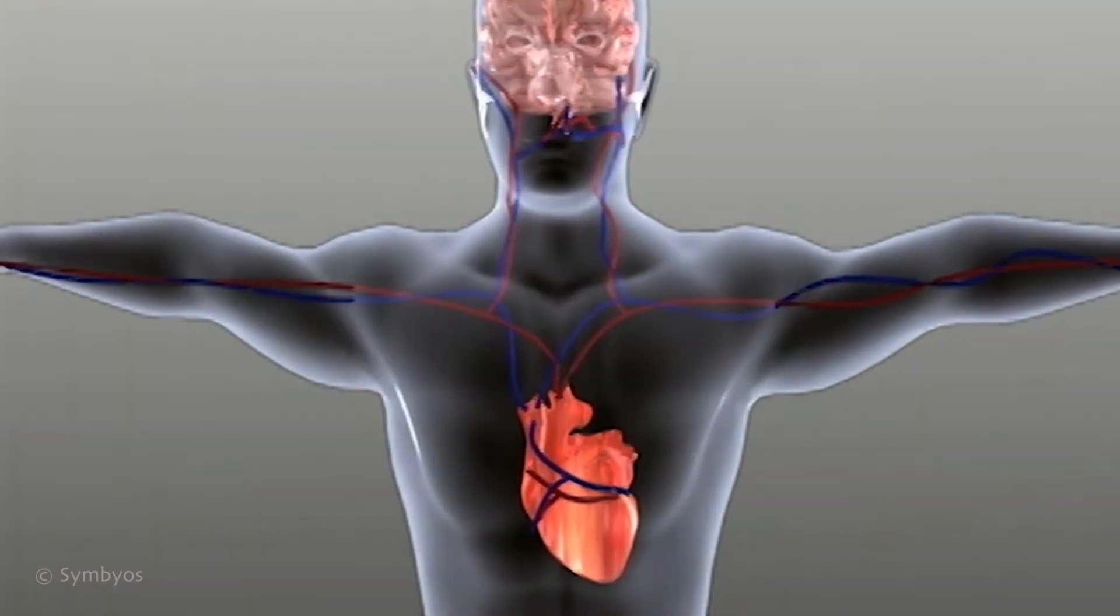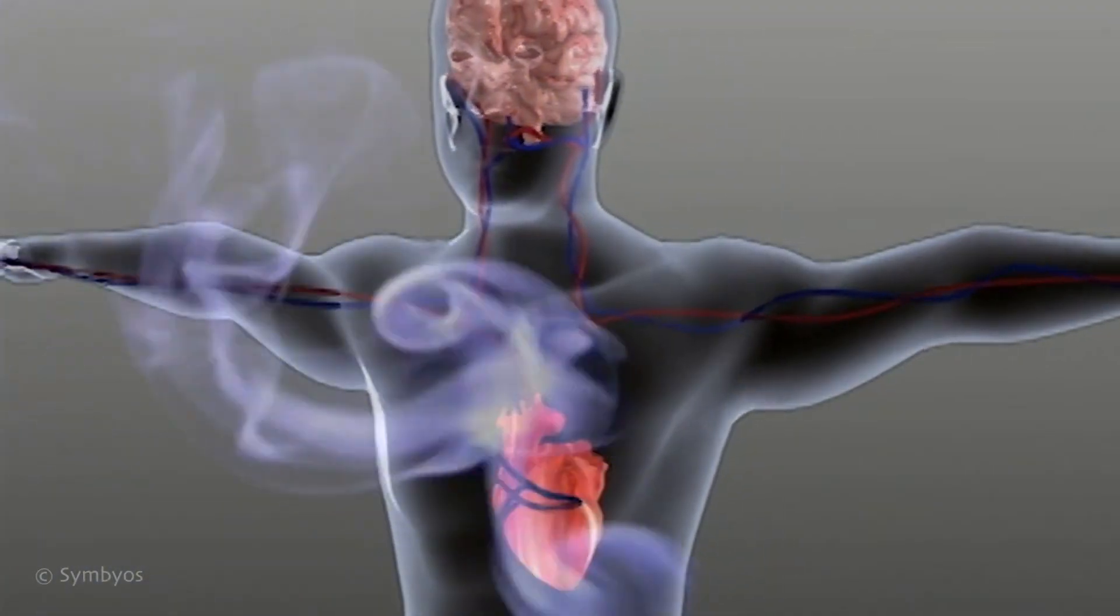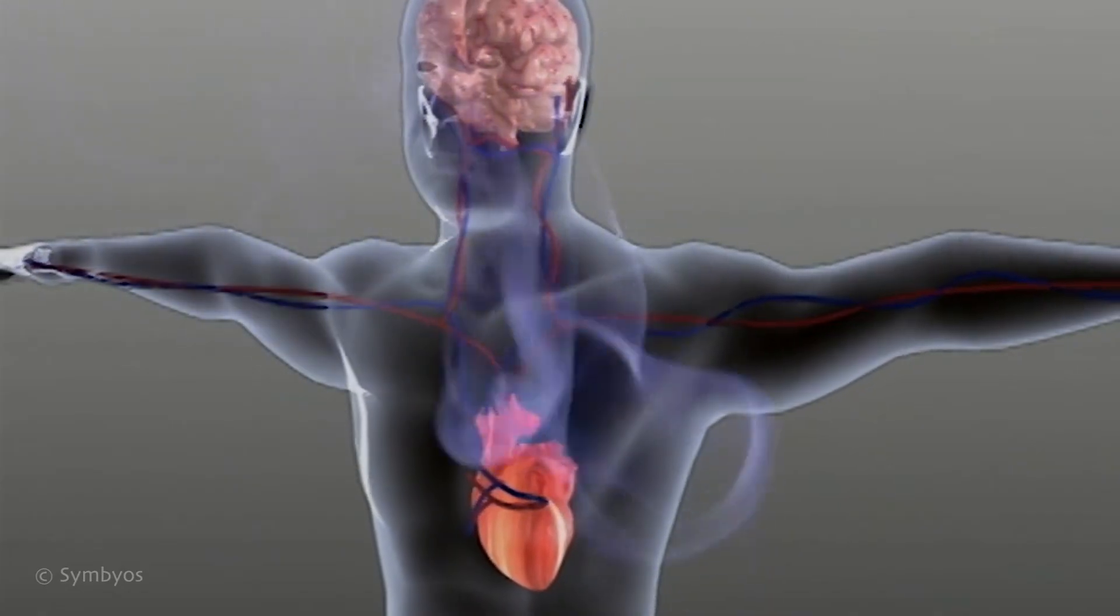The gum pocket increases to the point where the patient can no longer effectively remove plaque, leading to the destruction of tooth-supporting bone. Smoking impairs blood flow and can significantly interfere with a patient's ability to fight the bacterial infection.